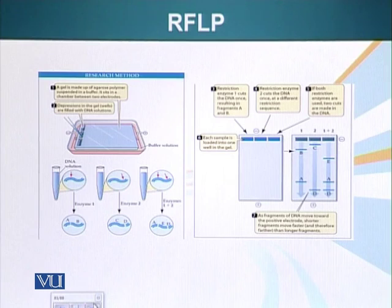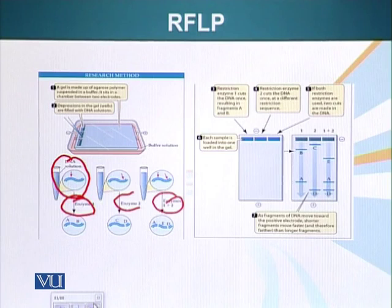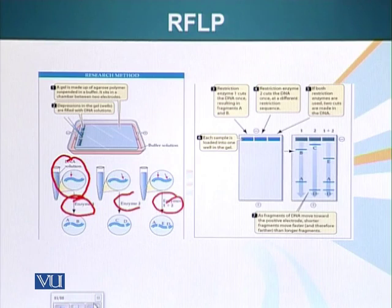Let's do this exercise. Here we have a DNA sample. We cut it with enzyme 1, then with enzyme 2, and then with enzymes 1 and 2 together. When we run them on a gel, we get this pattern. Enzyme 1 cuts one fragment into two pieces — B is slightly bigger than A. Enzyme 2 also generates two fragments, but one is much bigger than the other. Using 1 plus 2 together will generate three fragments.